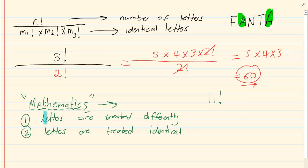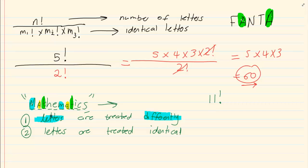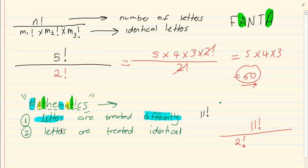That is on condition that the letters are treated differently — meaning your M's are different, your A's are different, and your T's are different. But when we say the letters are treated as identical, we have 11 factorial divided by the factorials of the repeated letters. M appears twice, A appears twice, and T appears twice. So the final answer is 11 factorial over 2 factorial times 2 factorial times 2 factorial.